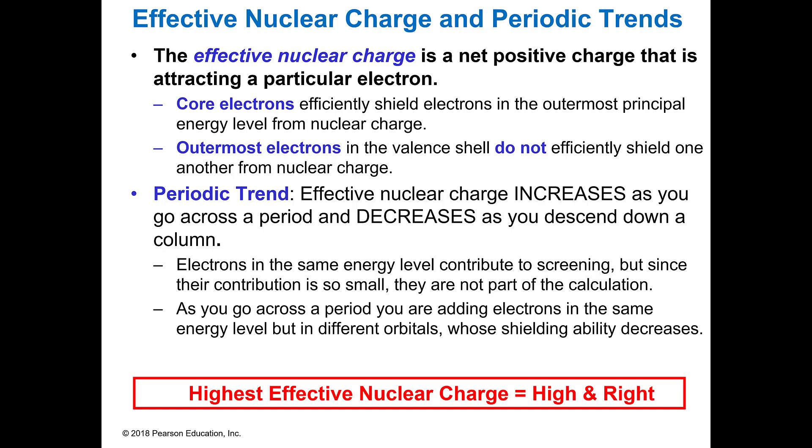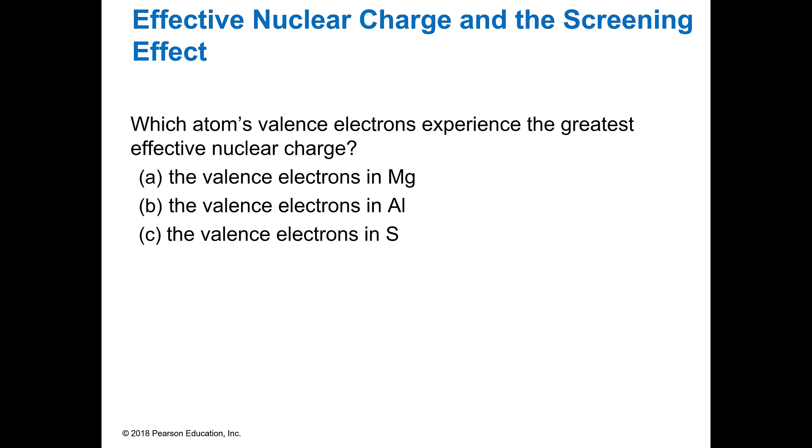So in a periodic trend, and this is how it's typically explained in a book, effective nuclear charge increases as you go across a period and decreases as you descend down a column. But we know that the highest effective nuclear charge is going to be high and right. So if one element is higher or right or both than the other, it's going to have a higher effective nuclear charge.